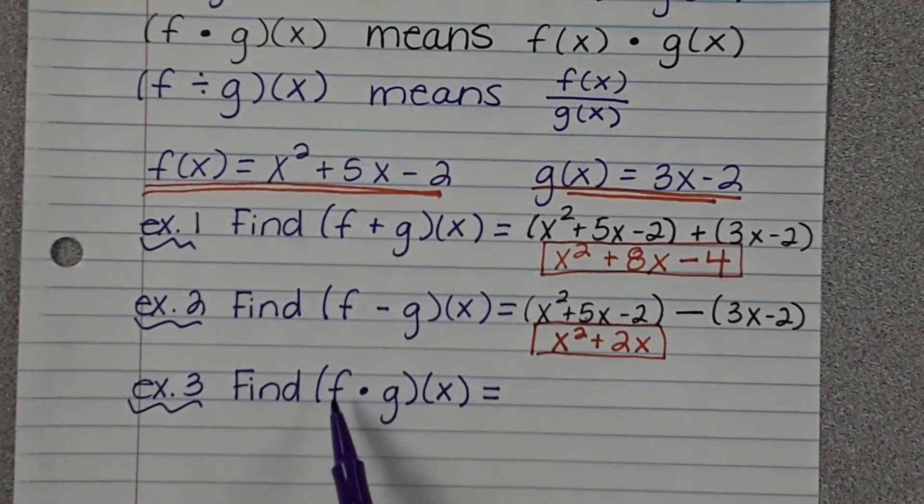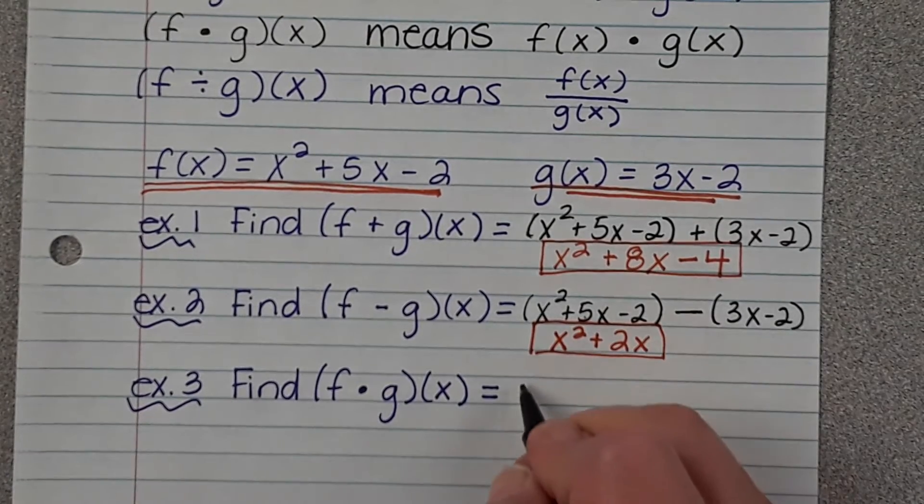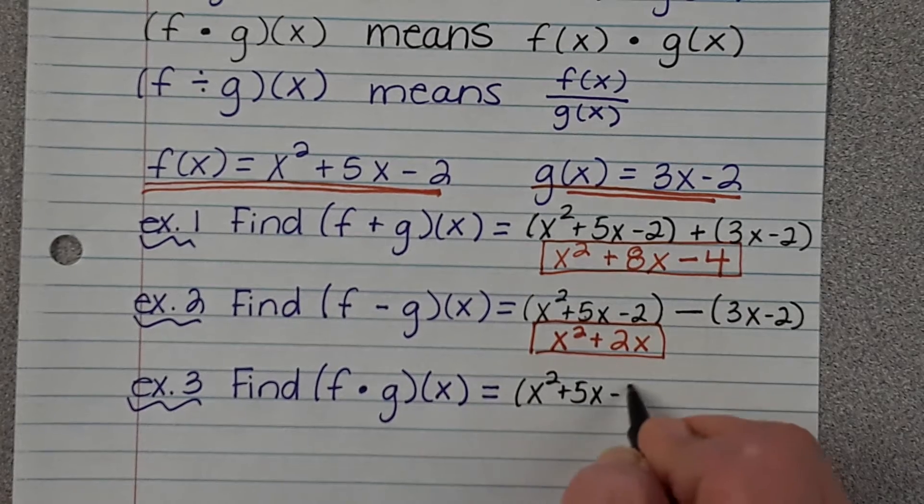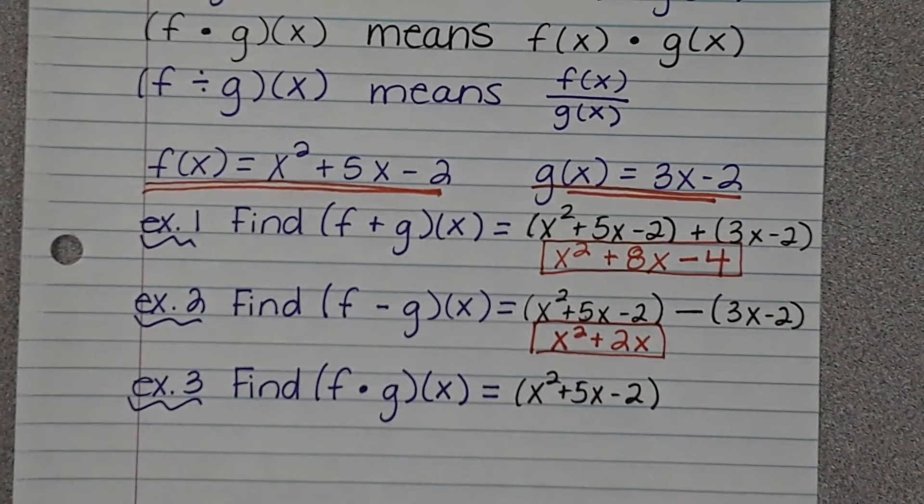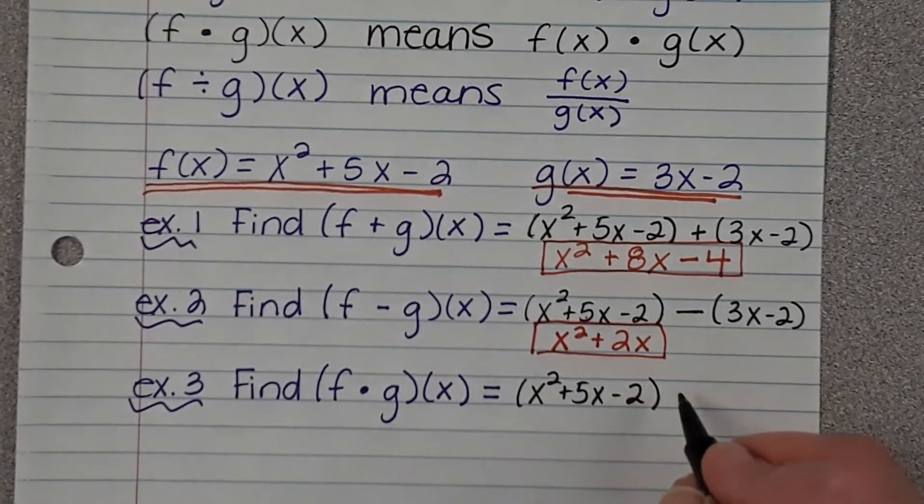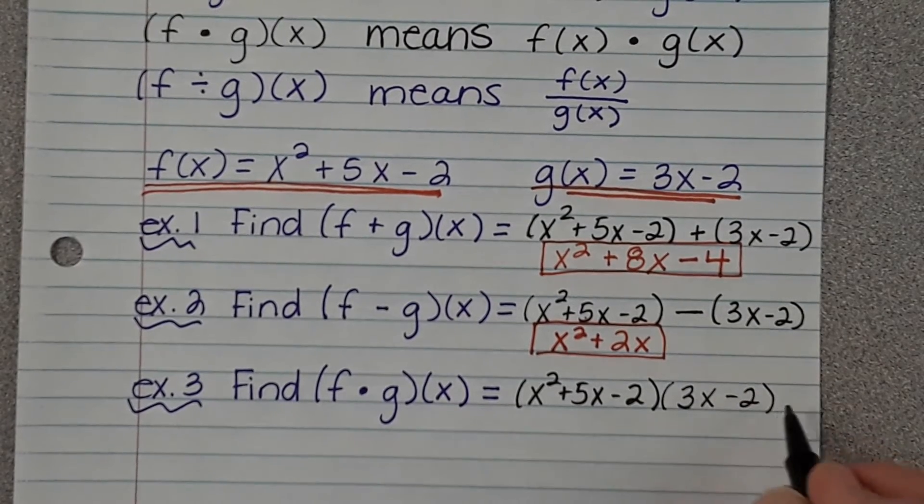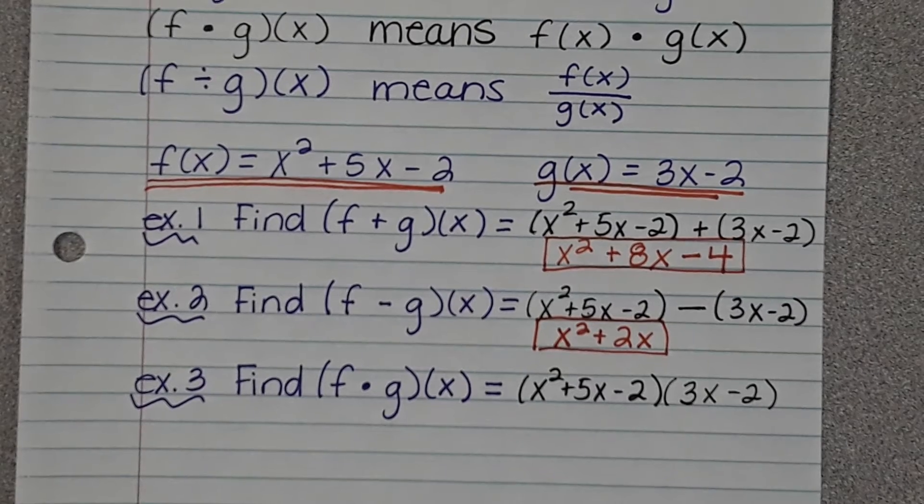Now, this means f times g. x² + 5x - 2. Notice that every single time I have put the function in parentheses. That's what you need to do. And it means we're going to multiply it by 3x - 2.